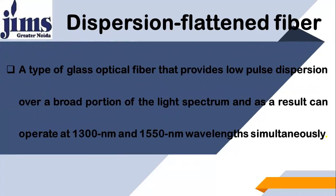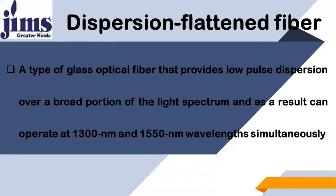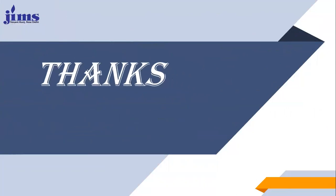Dispersion flattened fiber is a type of glass optical fiber that provides low pulse dispersion over a broad portion of the light spectrum, and as a result can operate at both the 1300 nanometer and 1550 nanometer wavelength windows simultaneously. Both dispersion shifted fiber and dispersion flattened fiber offer low dispersion, low attenuation, and low losses. Thank you very much.